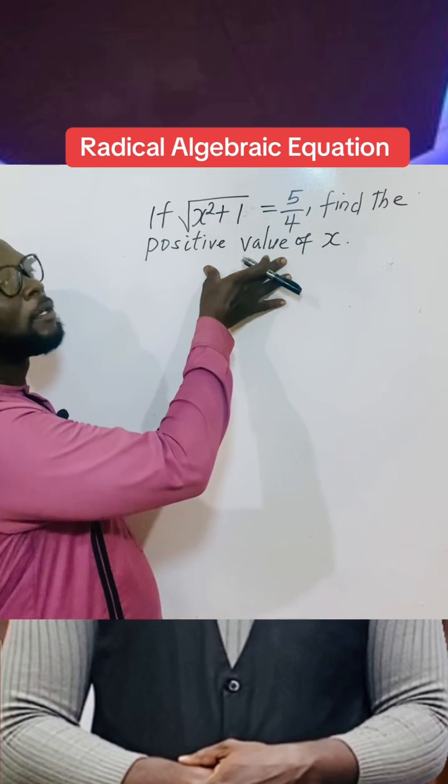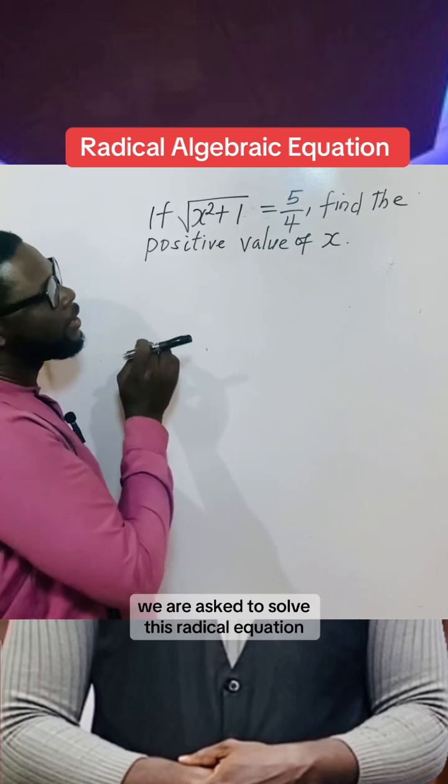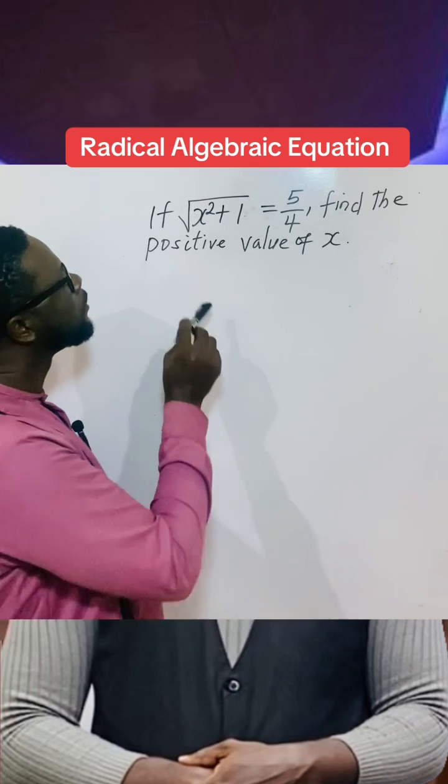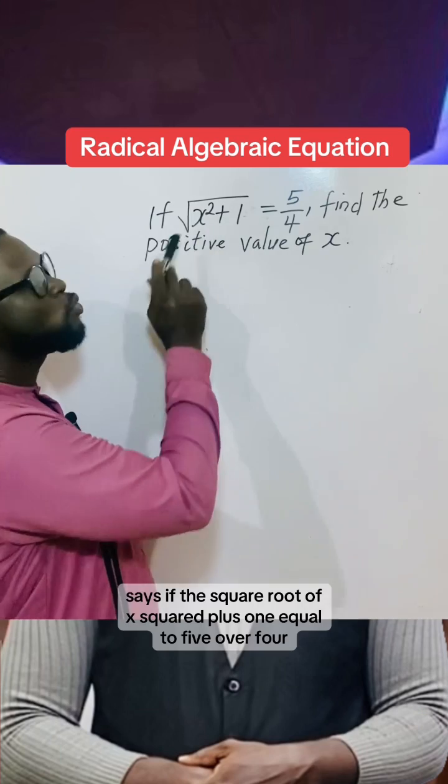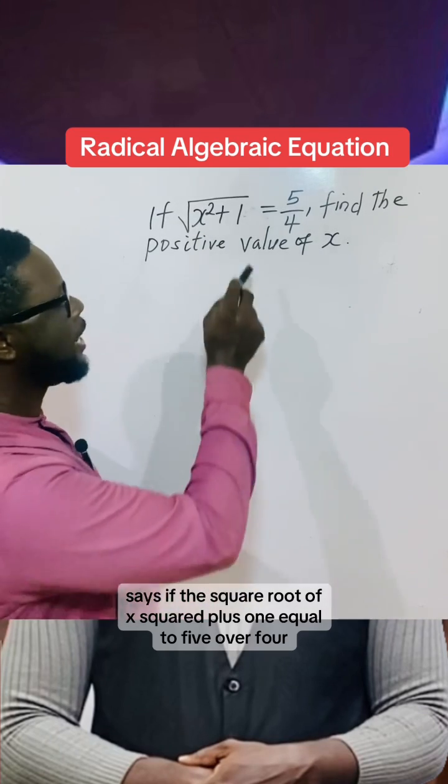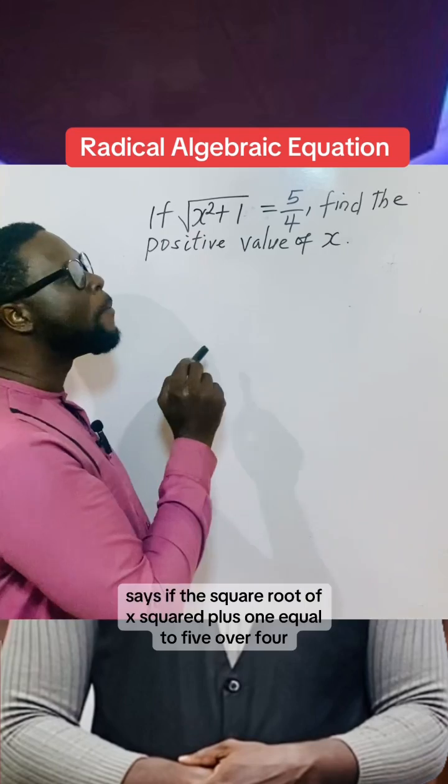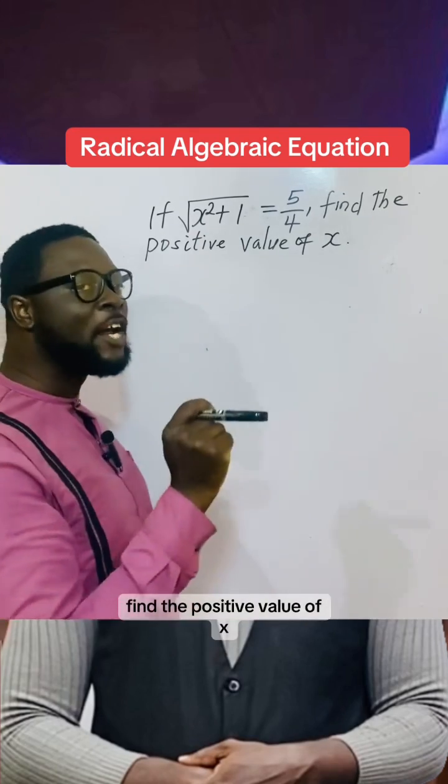Hello everyone. We are asked to solve this radical equation. It says if √(x² + 1) = 5/4, find the positive value of x.